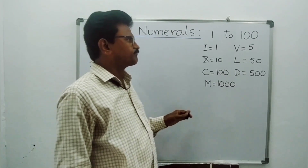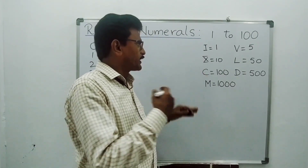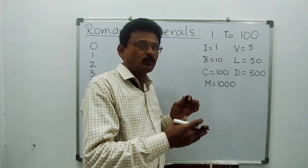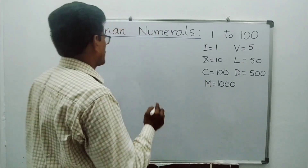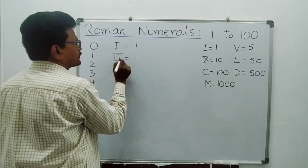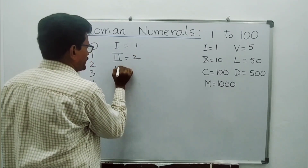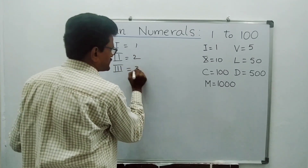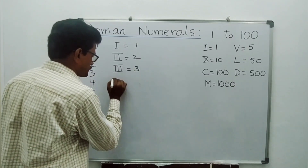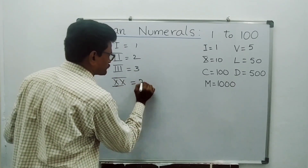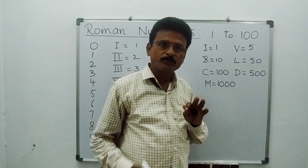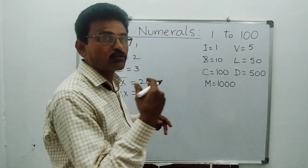If these numerals are repeated — I, X, C, M — one numeral after another, we have to add those numbers. For example, I is 1; II is 1+1=2; III is 1+1+1=3. X is 10; XX is 10+10=20; XXX is 10+10+10=30. CC is 100+100=200; CCC is 300.